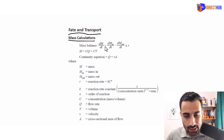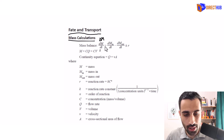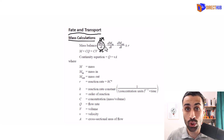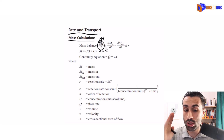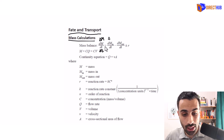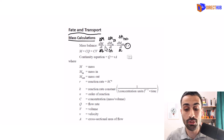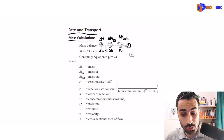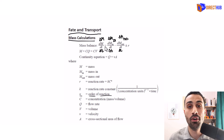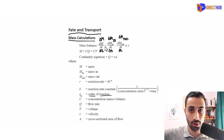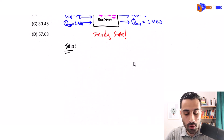From the handbook, dM/dt equals the mass flow rate in minus the mass flow rate out, plus or minus the reaction rate. The dM/dt term is zero for steady state — no accumulation. The reaction rate is always K·C^n, where n is the order of reaction: first order → n=1, second order → n=2, and so on.